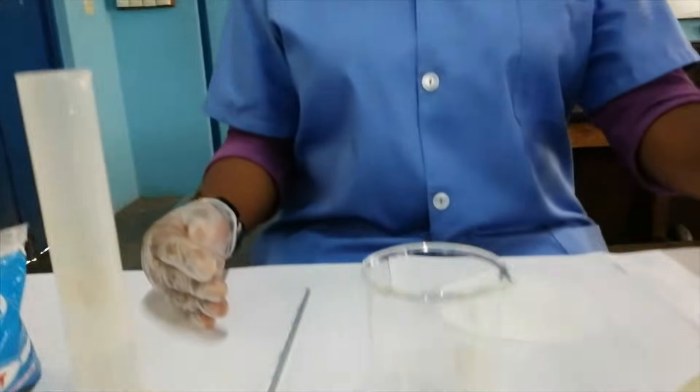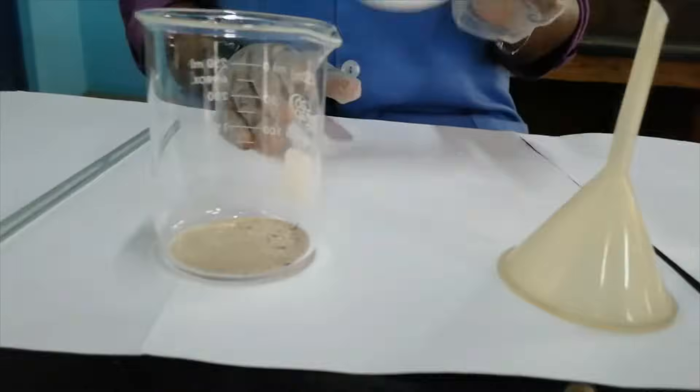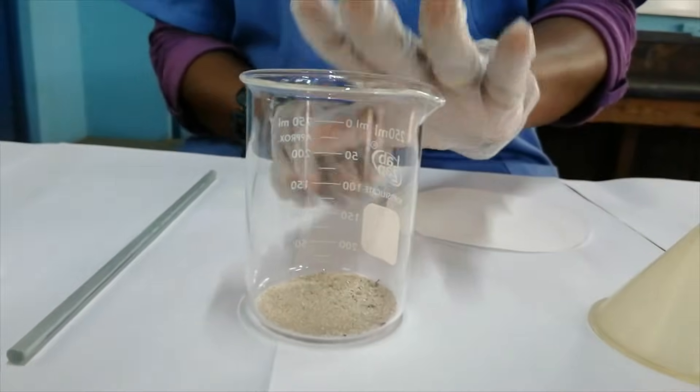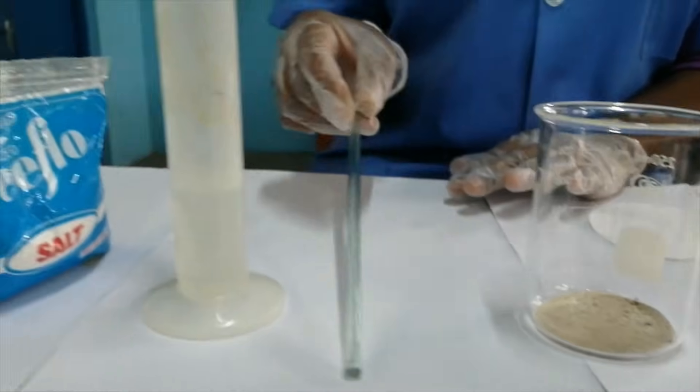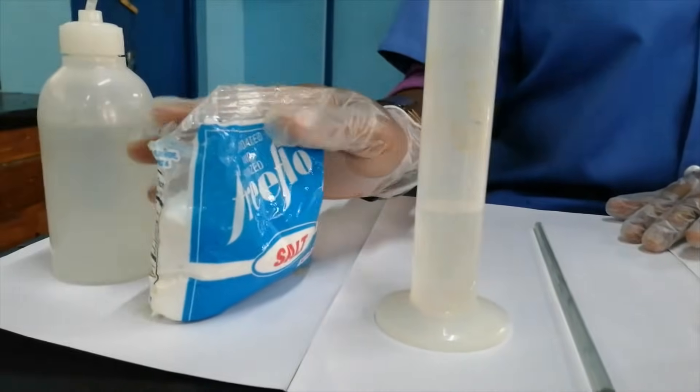Everyone, today we're going to separate a mixture of sand and salt. So let's look at the apparatus and materials that we'll be using. We have a conical flask, filter funnel, filter paper, the beaker with the sand, a glass rod or stirring rod, a measuring cylinder, and our wash bottle.